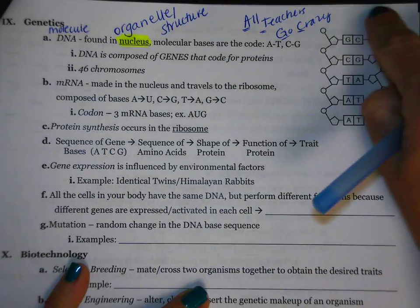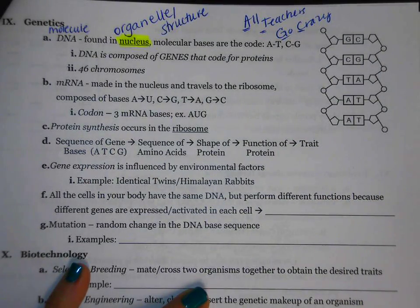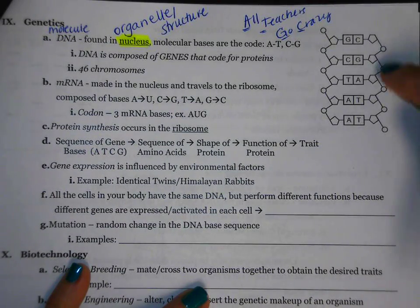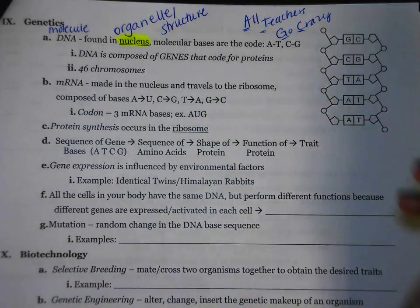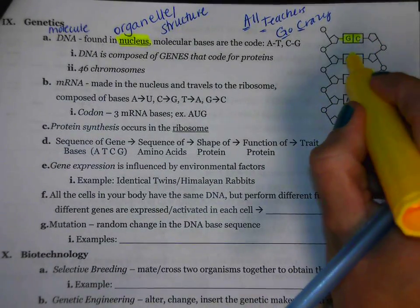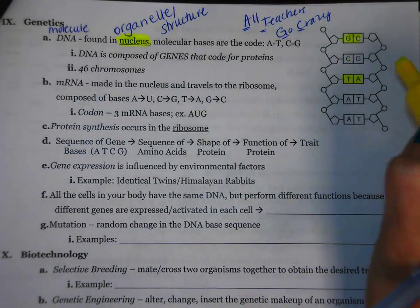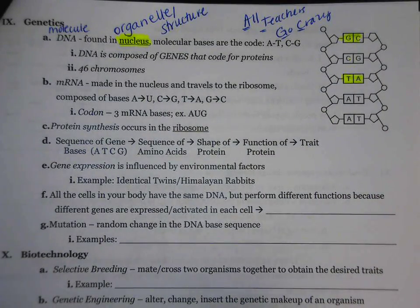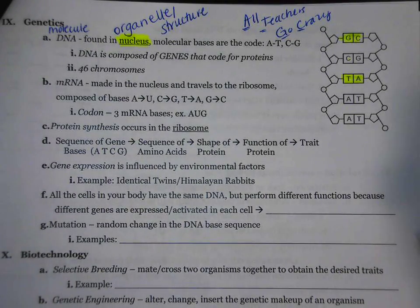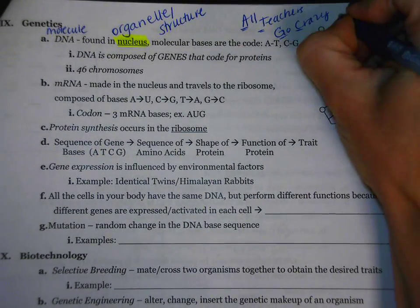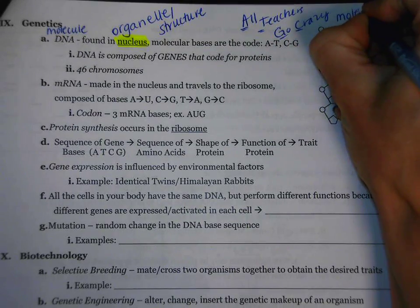If we look over here to the right, you'll actually see what DNA looks like if it's not twisted. When DNA is twisted, we call that a double helix. Here, it's not twisted. Each one of these letters represents a different base pair. Note that G and C are always bonded together and A and T are always bonded together. We call these molecular bases.